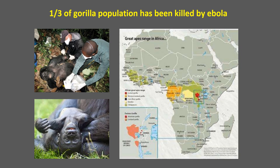The Ebola virus also got into the gorilla population in West Africa. About a third of the gorilla population has been killed to date by the Ebola virus, and that was partly its outbreak from chimpanzees and monkeys getting into other populations — gorillas and humans.